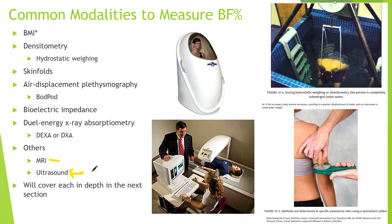Ultrasound is actually really good for measuring regional body fat percentage — for example, if you wanted to know the body composition of your thighs, you can do this pretty easily. It's not so great for measuring global body composition unless you do it over your whole body, which takes time. That's everything for today — your overview of body composition and how we measure it. Next time we'll dive a lot more in depth into how we actually measure body fat percentage and body composition.